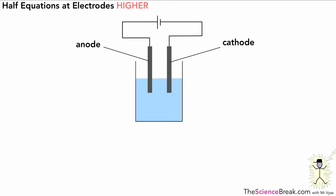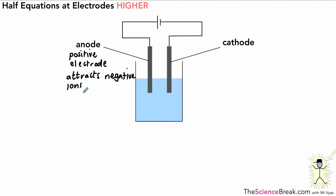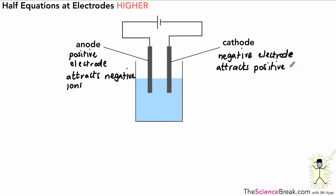Hello, today we're looking at half equations at electrodes. We have done quite a lot of electrolysis so far, so you may need to check out those videos. As a quick summary: we have an anode when doing electrolysis — that's the positive electrode, which attracts negative ions in the electrolyte or in the solution. The cathode is the negative electrode and that attracts positive ions, those are ions with a positive charge.